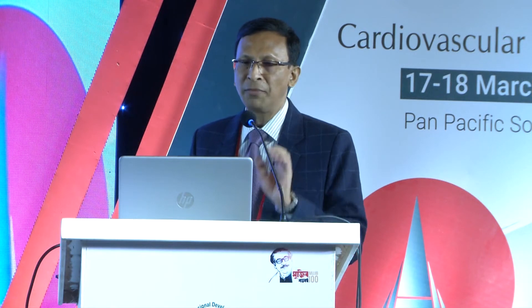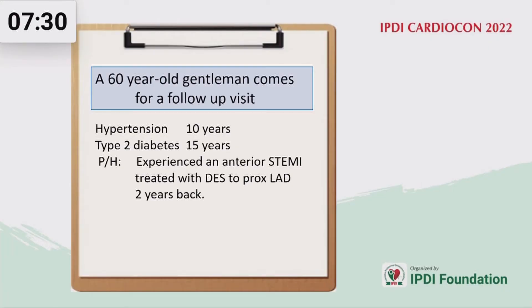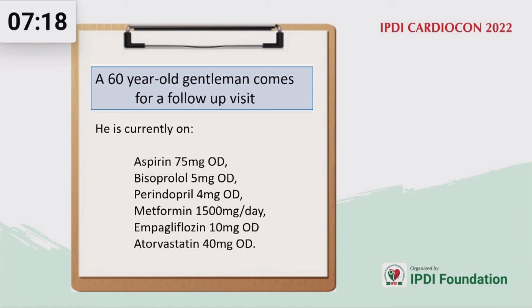A 60-year-old gentleman comes for a follow-up visit. He is hypertensive for the last 10 years, type 2 diabetic for the last 15 years. His past history reveals that he sustained an anterior ST elevation MI, treated with a drug-eluting stent to the proximal LAD two years back. He is currently on aspirin, bisoprolol, and perindopril for hypertension management, and metformin and empagliflozin for diabetes management, which are well controlled. He is on atorvastatin 40 mg OD for his lipid management.